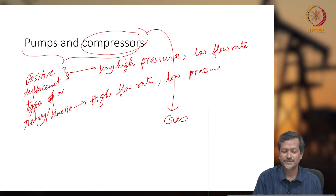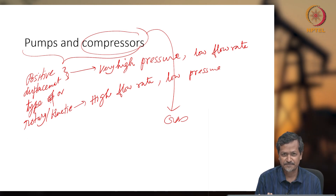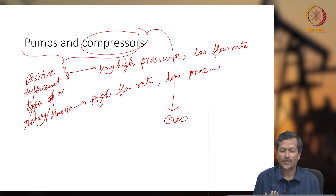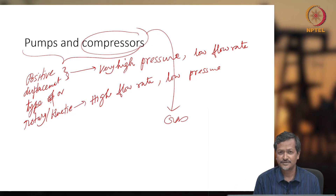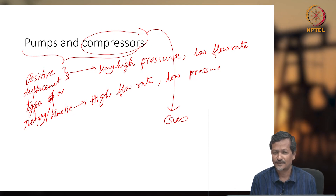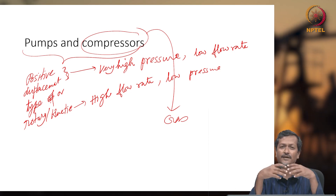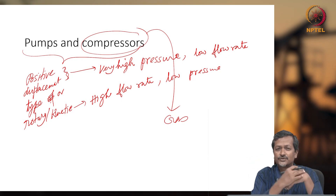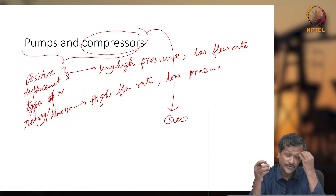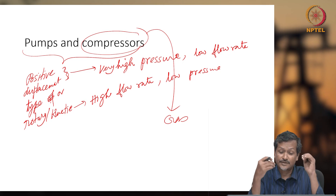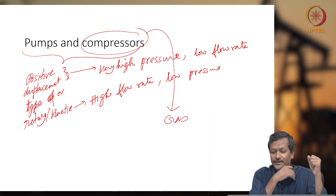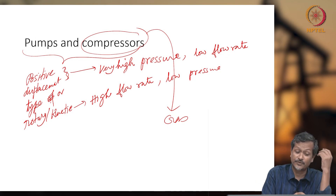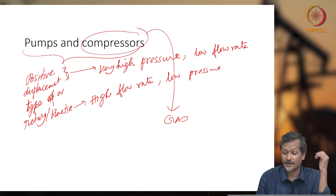What are the different compressors available? Same as pumps — positive displacement type and rotary type. Compressors are used in gas lift applications and for LNG or LPG production: if you have low pressure gas and want to make LPG, the gas is compressed. So what are the different compressor types? Positive displacement and rotary type.